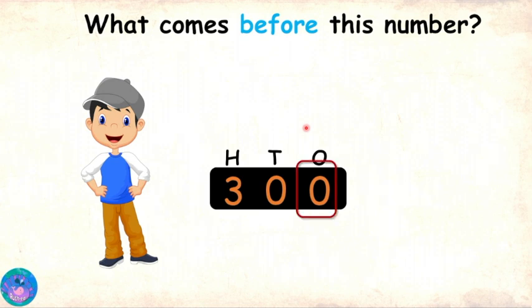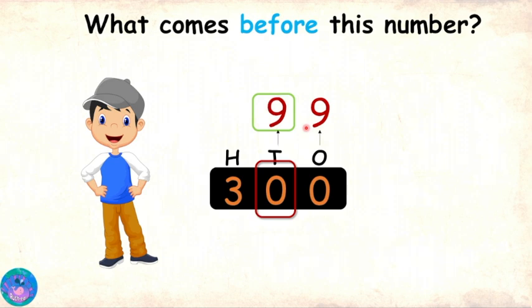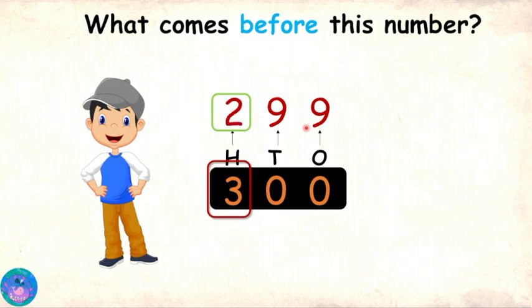Yes, we know that when ones digit is 0, we make the ones digit of the predecessor 9 and change the tens digit as well. Now, since the tens digit is also 0, in the predecessor we will put it as 9. The hundreds digit in the given number is 3, and 2 comes before 3. So the hundreds digit of the predecessor will become 2. Therefore, the predecessor of 300 is 299.